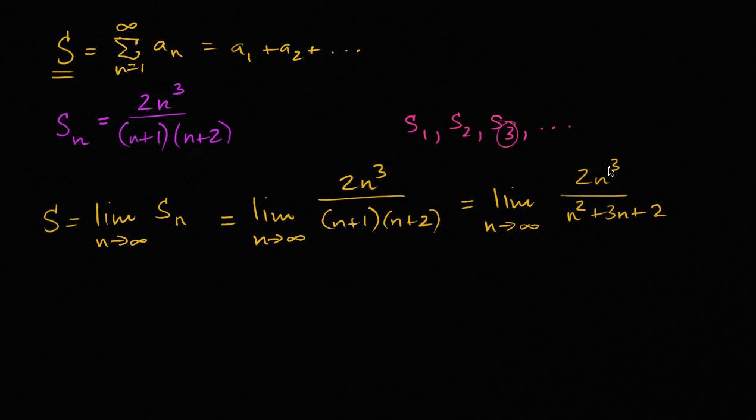And let's see, we can divide the numerator and the denominator by n squared, so this is going to be the limit as n approaches infinity of, if we divide the numerator by n squared, you're going to have two n, and then the denominator divided by n squared, you're going to have one plus three over n, plus two over n squared.